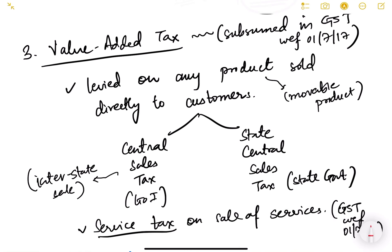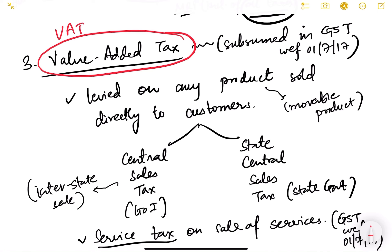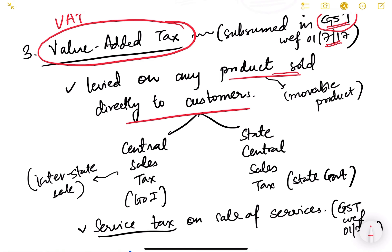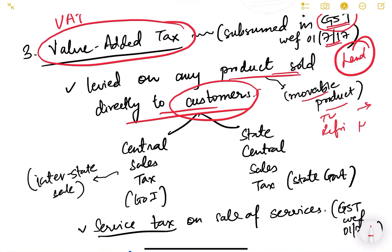The third kind of indirect tax is value added tax — VAT. VAT is levied on any product sold directly to the consumer, and these are movable products like TV, refrigerator, mobile phones, clothes — anything which can be transported. It is not imposed on land or houses, which are not movable. Value added means that at every stage of the supply chain — from raw material to manufacturing, processing, wholesaler, and retailer — some value is added, and the tax is imposed on that value addition at every step.